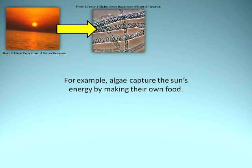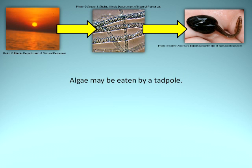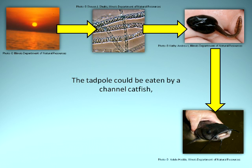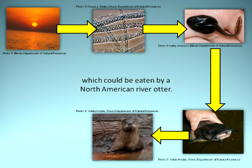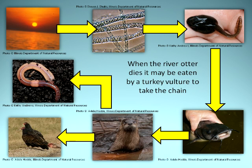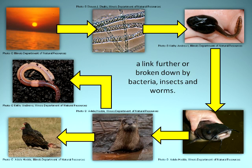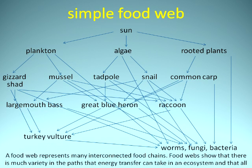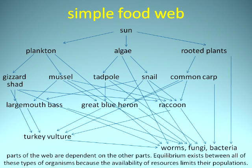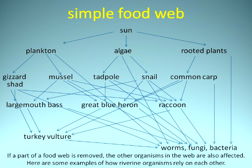For example, algae capture the sun's energy by making their own food. Algae may be eaten by a tadpole. A tadpole could be eaten by a channel catfish, which could be eaten by a North American river otter. When the river otter dies, it may be eaten by a turkey vulture or broken down by bacteria, insects, and worms. A food web represents many interconnected food chains. Food webs show that there is much variety in the paths that energy transfer can take in an ecosystem, and that all parts of the web are dependent on the other parts. Equilibrium exists between all of these types of organisms because the availability of resources limits their populations. If a part of a food web is removed, the other organisms in the web are also affected.